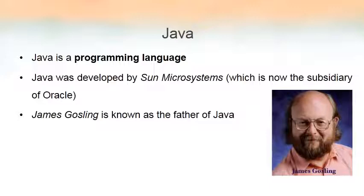Unfortunately, computers can't understand any of the languages I mentioned. Computers do not know English, Hindi, Sanskrit, or any human language, because computers are machines. All machines understand only one language, known as machine language, or in other words, binary language. In binary language, we represent everything in ones and zeros. So if you want a computer to do something, we need to communicate in terms of ones and zeros. Is it possible for you to play games by sending messages to the computer using ones and zeros only?